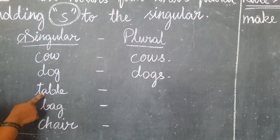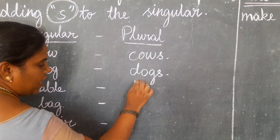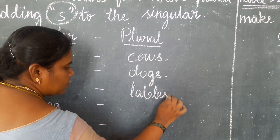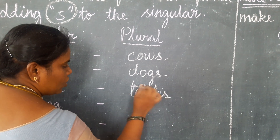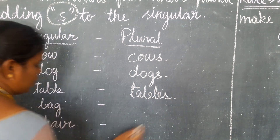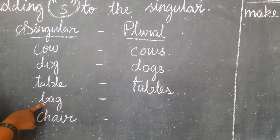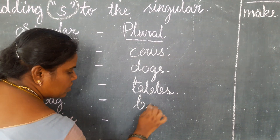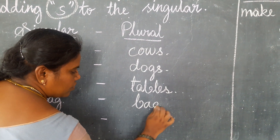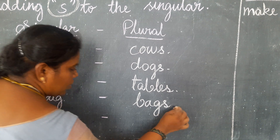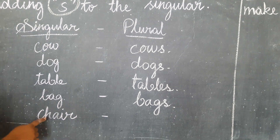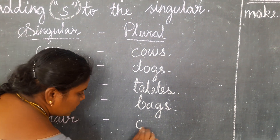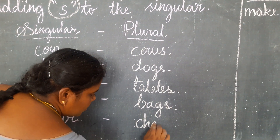Next, table — the answer is tables. Then bag — the answer is bags. Then last one, child — the answer is children.